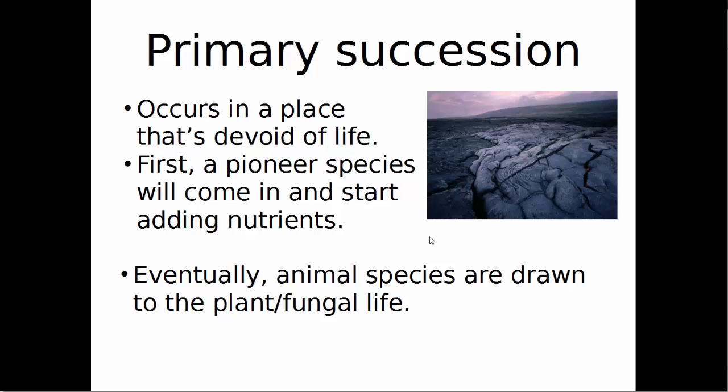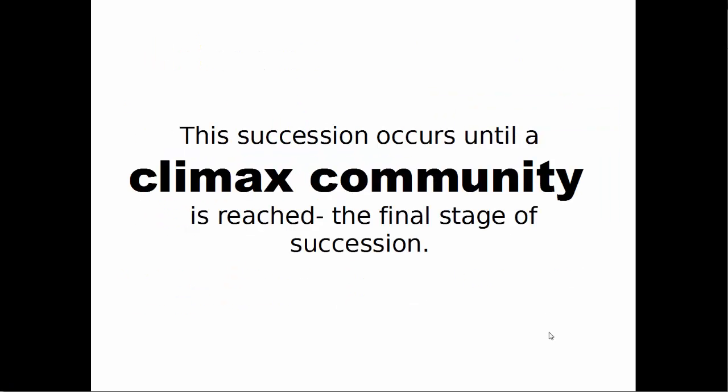Over time, bigger animals and bigger plants that require more resources are able to come in as nutrients build up in the area. This succession continues until a climax community is reached — the final stage of succession. A climax community typically has plants and animals with a long lifespan that require a lot of resources but will not be pushed out or succeeded by other organisms.